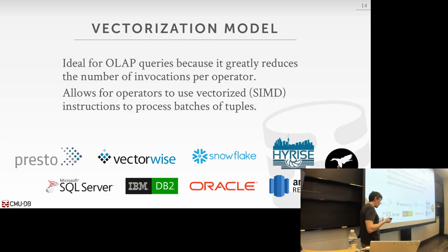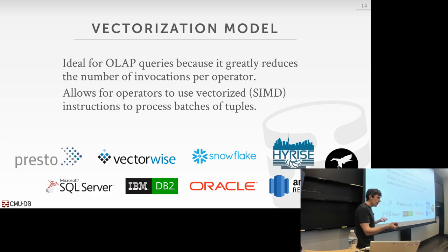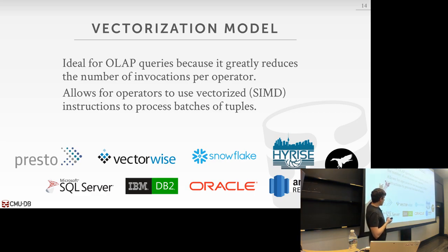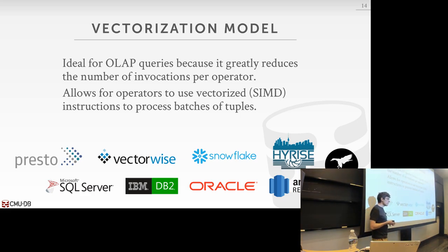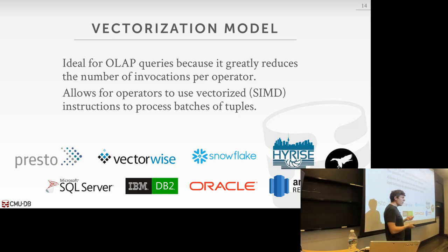The vectorized model is ideal for analytical queries, which do long scans over large portions of tables. Rather than getting one tuple per next() call, we get a batch, and the batch size can vary depending on where the data is coming from and how it will be processed. Every major data warehouse built in the last 10 years or so uses the vectorized model because the performance impact is quite significant. In general, we'll focus on the iterator model, but the vectorized model is an easy extension of it; the materialization model really only comes up in specialized systems.